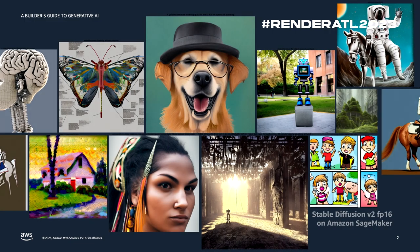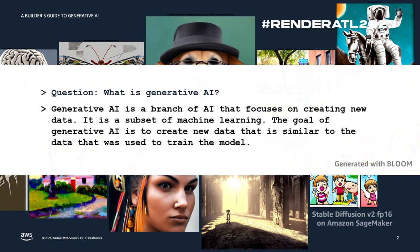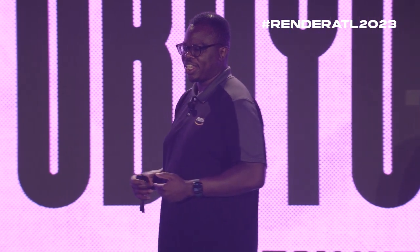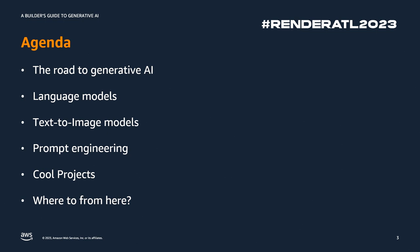I'm sure you've all seen Generative AI — all these cool things like generating images, basically using machine learning based on human data to actually create something. It's really about how we can embed our knowledge so a machine can also utilize that knowledge to create applications. For this talk, I'm going to go through a history of how we got to Generative AI: language models, text-to-image, prompt engineering, and show off some cool projects I've been working on as a builder. And then where do we go from here?